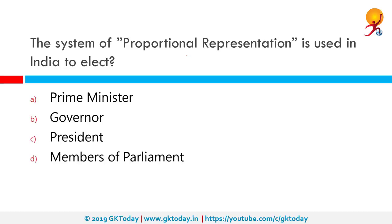The system of proportional representation is used in India to elect whom? Proportional representation is the other way of having members in governing bodies other than direct election. Our upper house — the Rajya Sabha — is based on the proportional representation system. Based on their strength in a State Assembly, political parties can nominate their members to the upper house. The same system is followed for electing members of the Legislative Council from State Assemblies. The President also comes under this umbrella. The correct answer here is President.